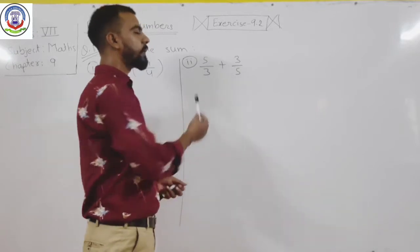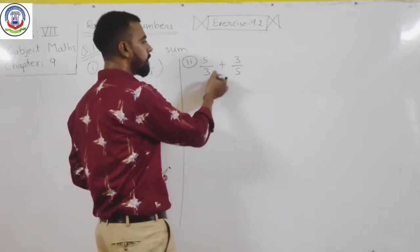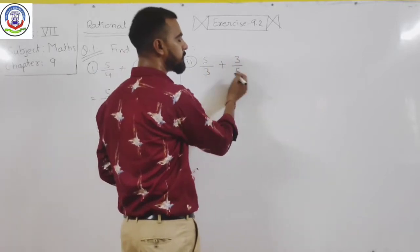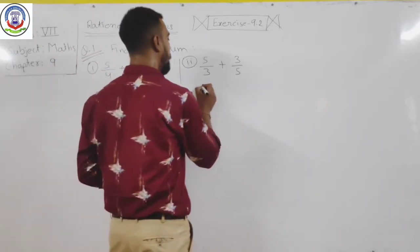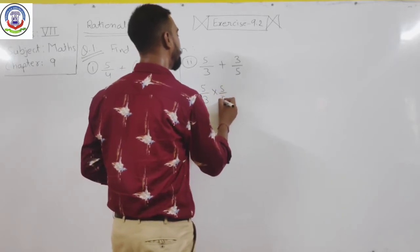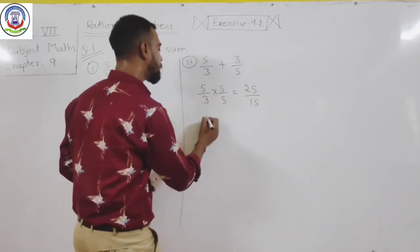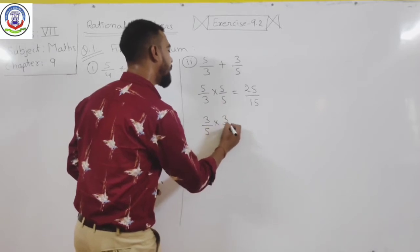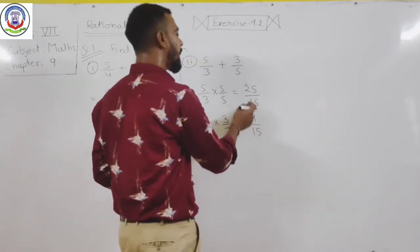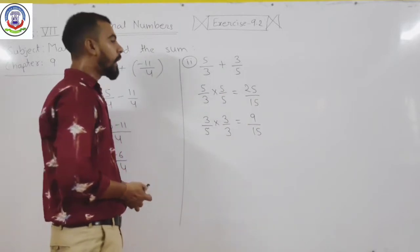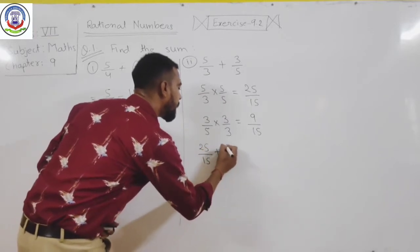Our next question is 5 upon 3 plus 3 upon 5. Here the denominator of the first rational number is 3 and the denominator of the second is 5, which means the denominators are not equal. You have to multiply 5 upon 3 by 5, and you will get 25 upon 15. The next number is 3 upon 5 — multiply by 3 and you will get 9 upon 15.